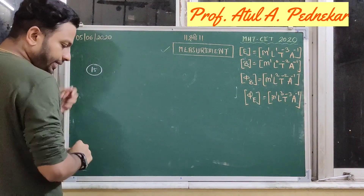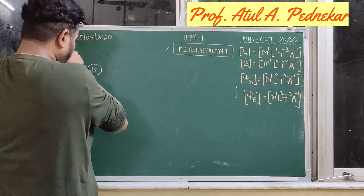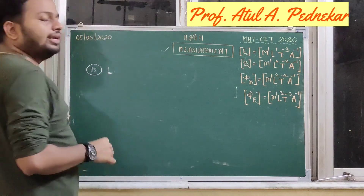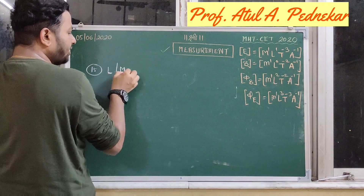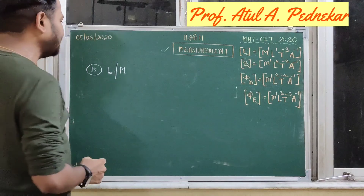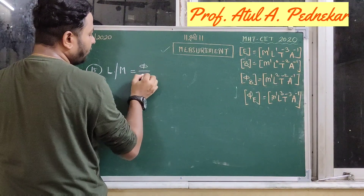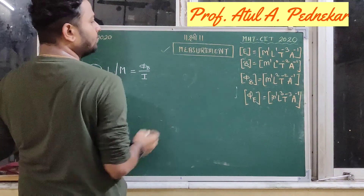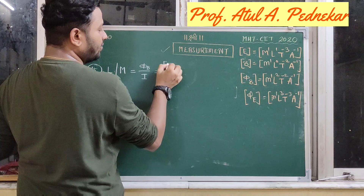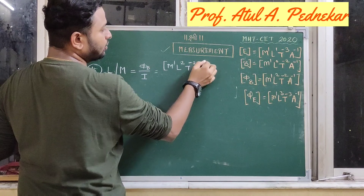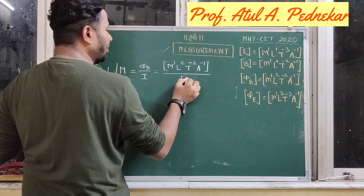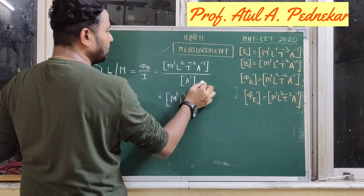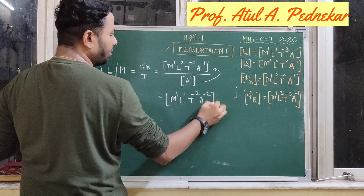The next quantity — quantity number 15 — is the coefficient of self induction or coefficient of mutual induction. This is calculated as magnetic flux divided by current. Magnetic flux dimensions are M1, L2, T raised to minus 2, A raised to minus 1. Current has dimension A raised to 1. Dividing — A raised to minus 1 and A raised to 1 shift to give A raised to minus 2. So the dimensions are M1, L2, T raised to minus 2, and A raised to minus 2.